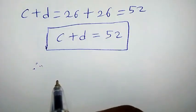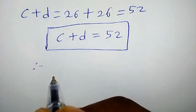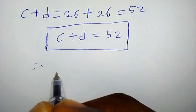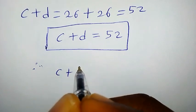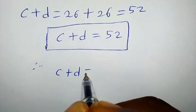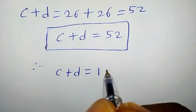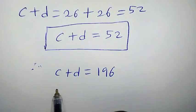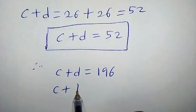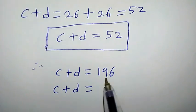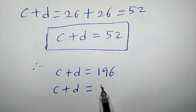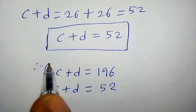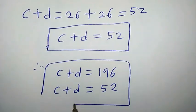Therefore, the two distinct solutions that we have are c plus d equal to 196, and c plus d equal to 52. This is the required solution.